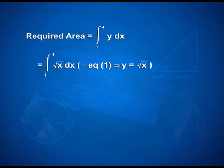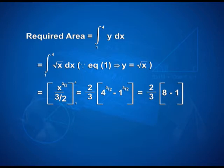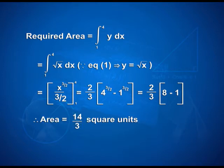Since equation 1 gives us y is equal to the square root of x, that is equal to x to the power 3/2 divided by 3/2 with limits 1 and 4. On applying limits, we have (2/3) times (4 to the power 3/2 minus 1 to the power 3/2), which equals (2/3) times (8 minus 1), giving us 14/3 square units as the area.